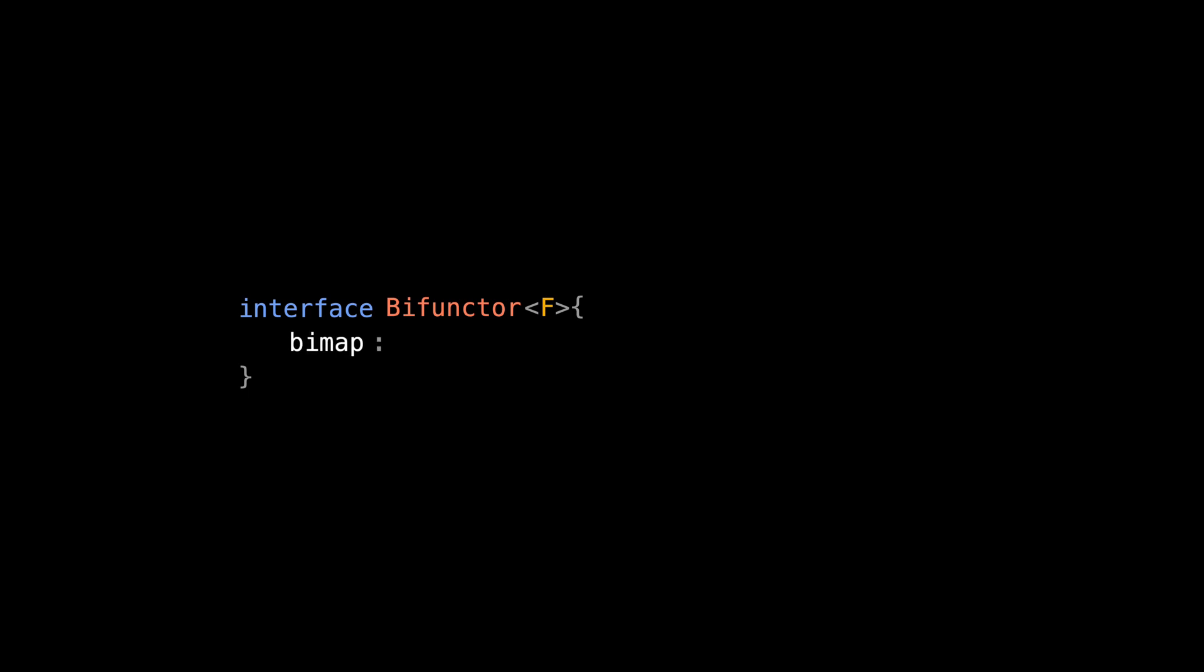As we have just seen, the way bimap works is, it first receives two general unary functions, it then receives f of a and b, and by using our input functions, it returns f of c and d. Well, this is not a valid TypeScript syntax. Let's take a look at bifunctor definition in TypeScript.